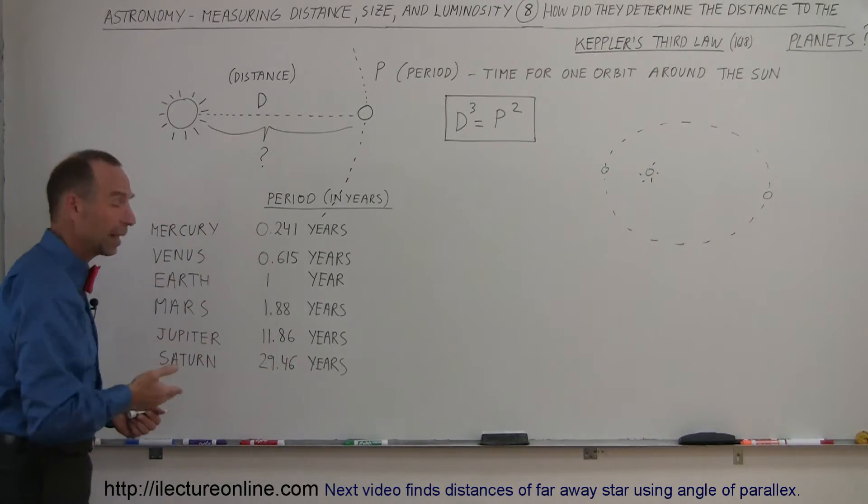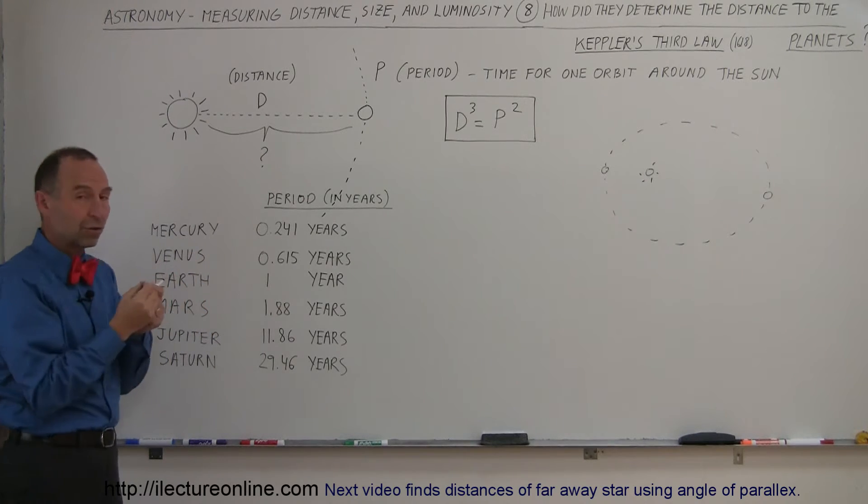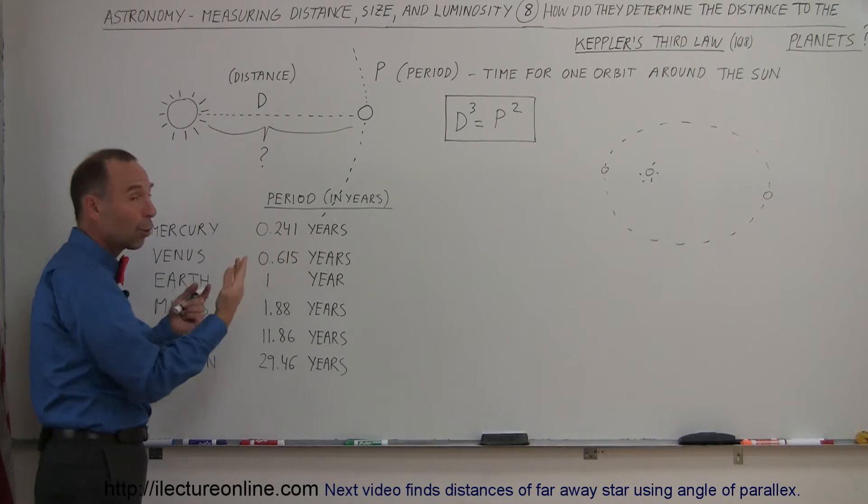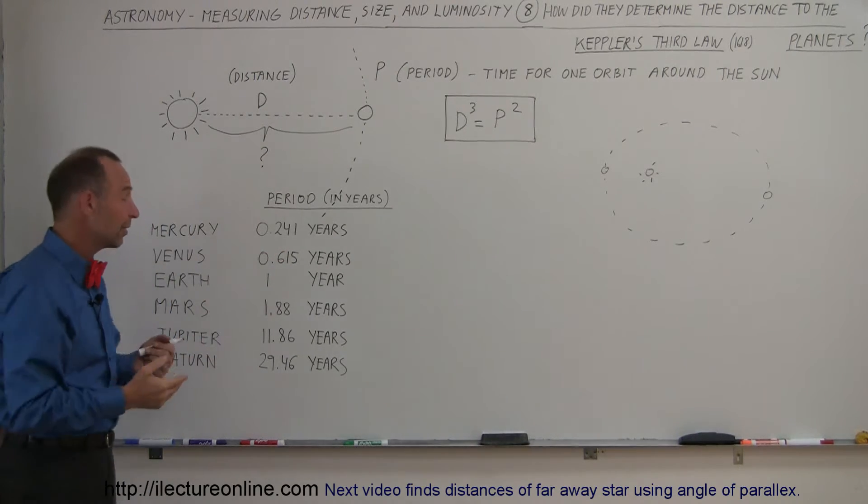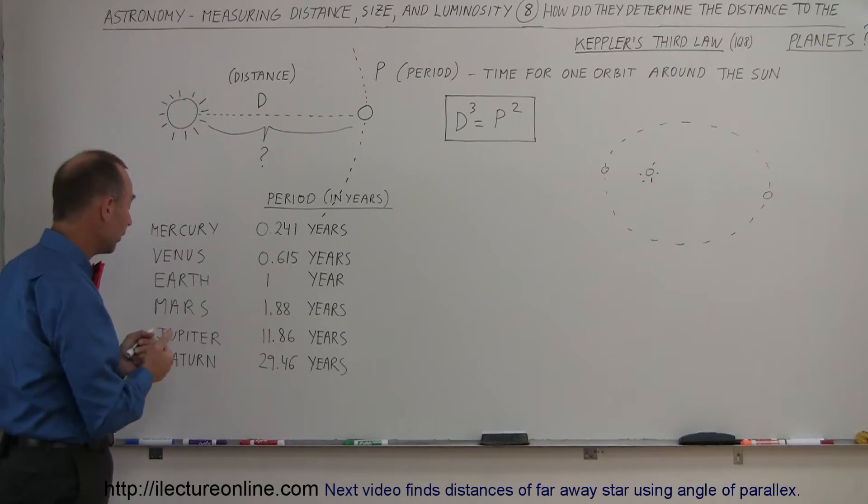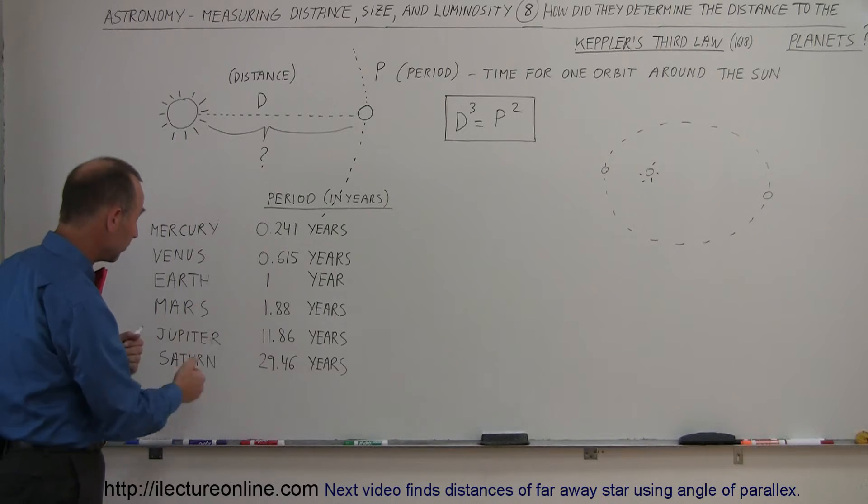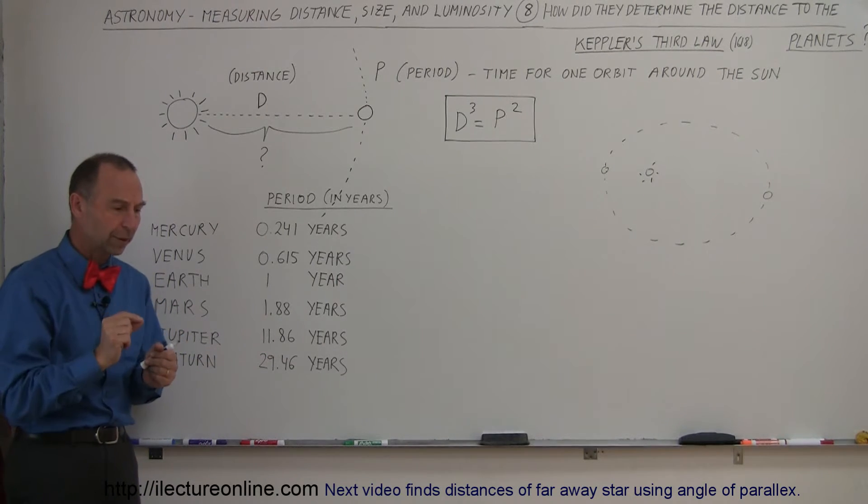For the six planets that were known, including the Earth, they were able to measure just simply by observing that Mercury goes around the sun once every quarter of a year. For Venus, it's about once every six-tenths of a year. For the Earth, of course, it's one year. For Mars, it was almost two years. For Jupiter, it was almost 12 years. And for Saturn, almost 30 years. They were able to measure those periods.